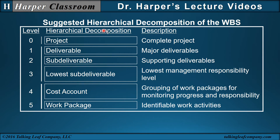The suggested hierarchical decomposition of the WBS starts with the project at level zero — the complete project. Level one is the major deliverables. Level two are sub-deliverables and supporting deliverables, and there could be a number of levels. Eventually you'll have your lowest management responsibility level, cost accounting — grouping of work packages for monitoring progress and responsibility — and then work packages, which are the smallest identifiable work activities in the WBS.